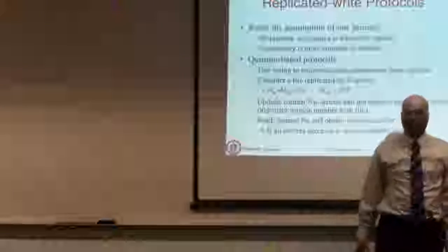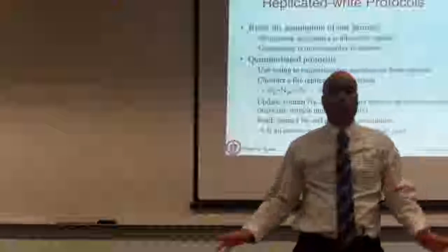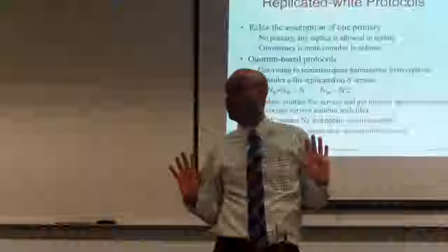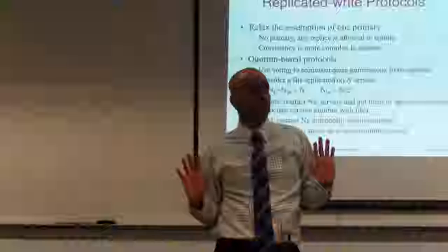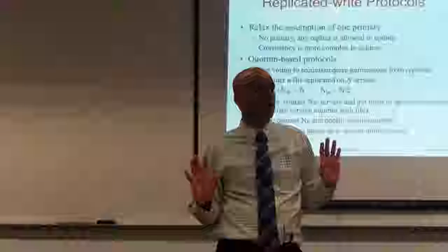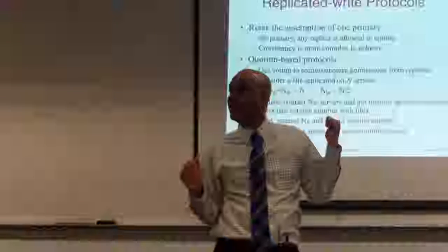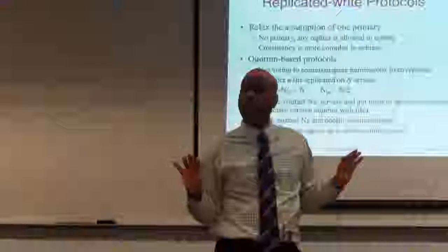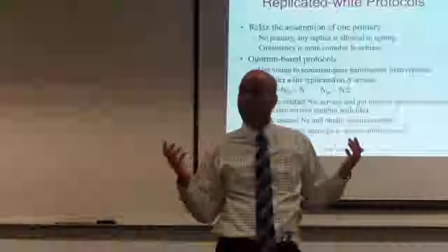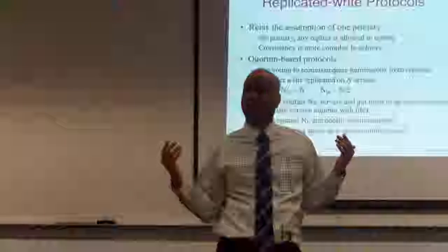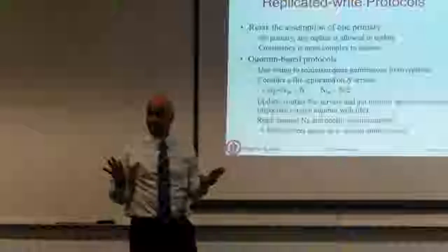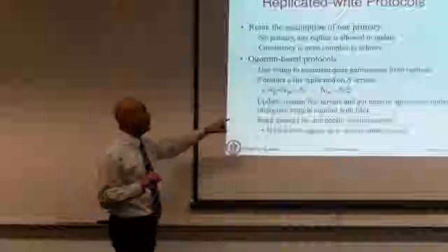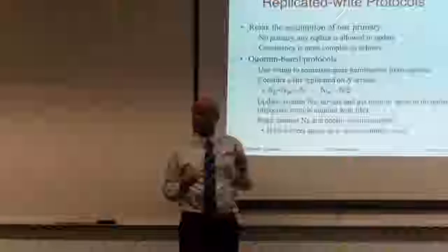To write a file you have to send it to the write quorum, which is n_w servers. The rule for writing is you write to n_w servers so all of them now have the most up-to-date version. To read a file you contact n_r servers; if those servers all agree on the version number, you can read the file because they voted and agreed on the version. To write, you write to that many servers.